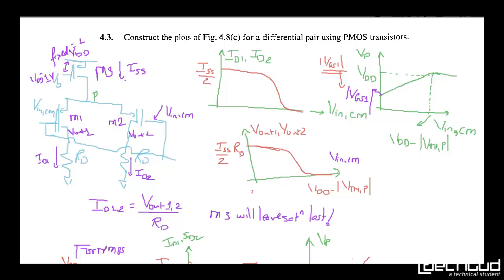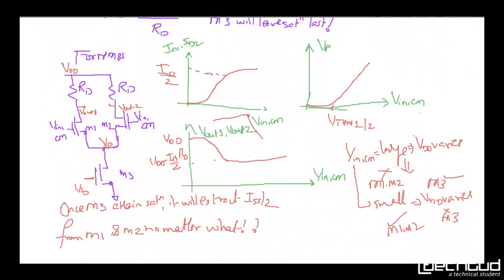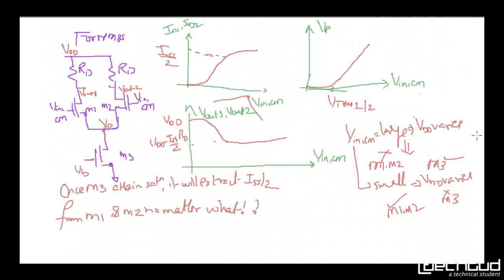NMOS has been given in the book solution, and NMOS has this type of characteristics. So this is the supply, RA, RD, M1, M2, and this is the M3 transistor.